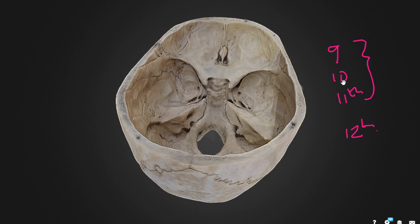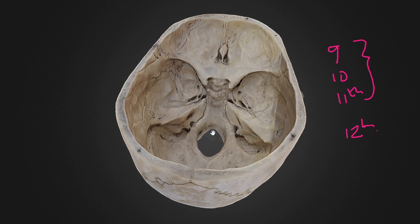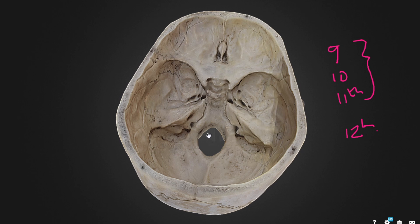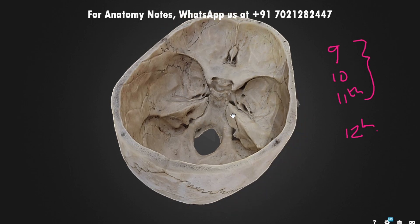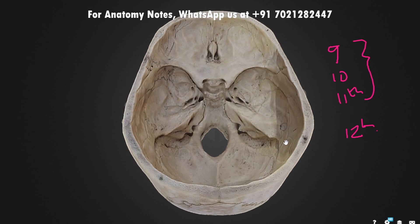The ninth is the glossopharyngeal nerve, the tenth is the vagus nerve, and the eleventh is the accessory nerve. The accessory nerve has two components: the spinal part enters through the foramen magnum, unites with the cranial part, and both exit together through the jugular foramen. The foramen magnum also transmits the medulla oblongata, the surrounding meninges (dura mater, arachnoid mater, pia mater), the spinal accessory nerve, the vertebral artery, the apical ligament of dens, and the membrana tectoria. Examiners will place a probe in one of the openings and ask which structures pass through it, so you should be able to name both the cranial nerves and other structures for each opening.